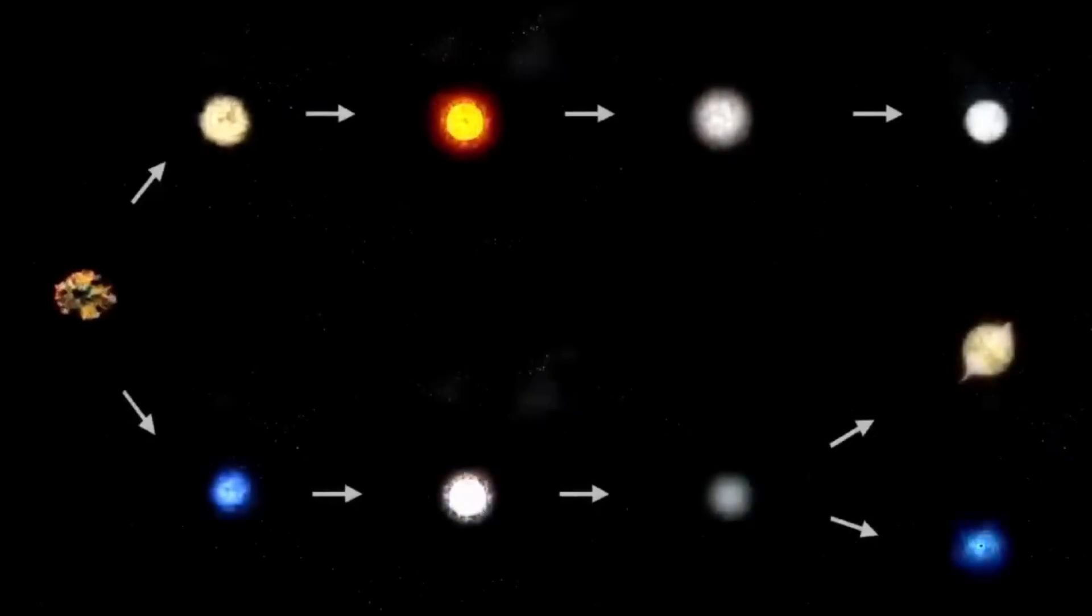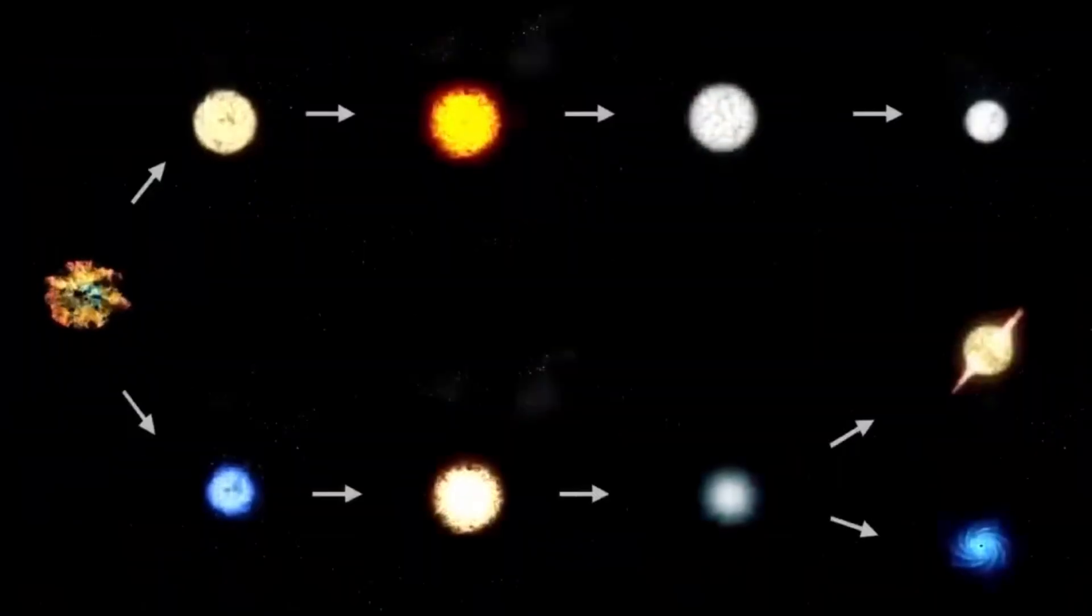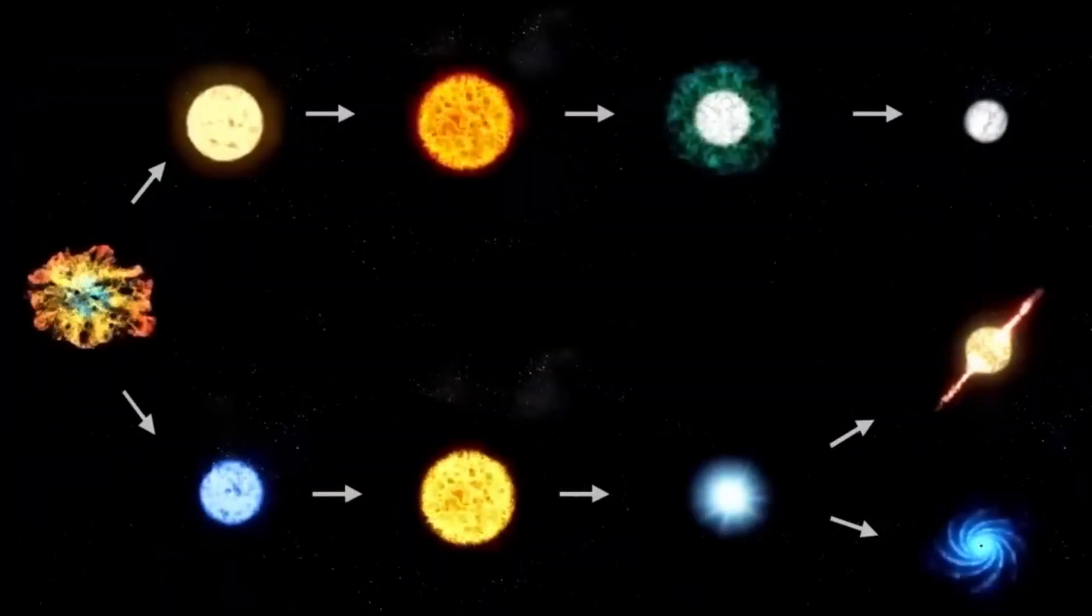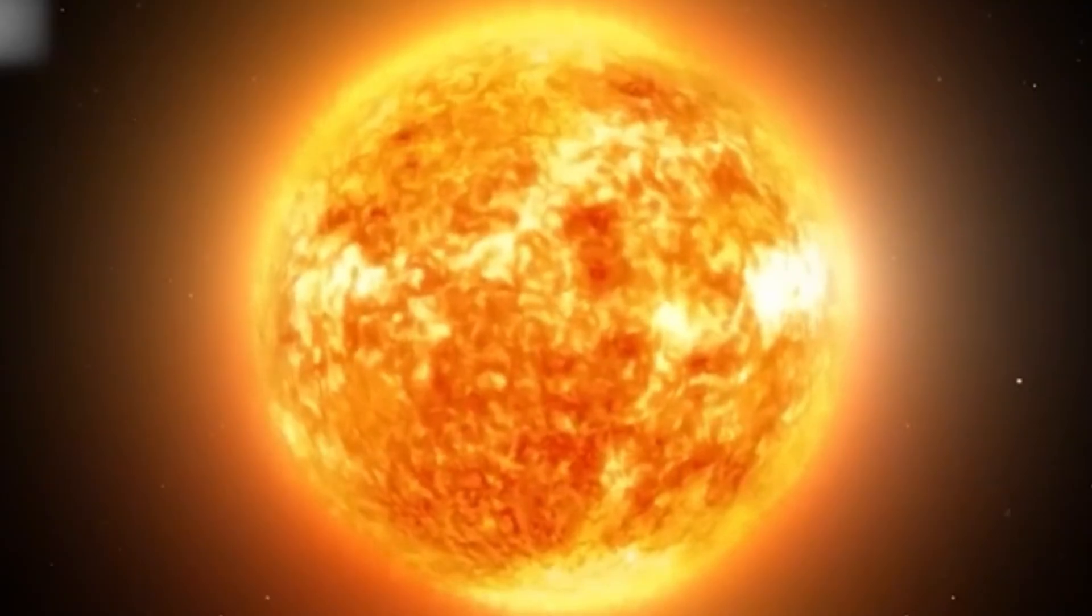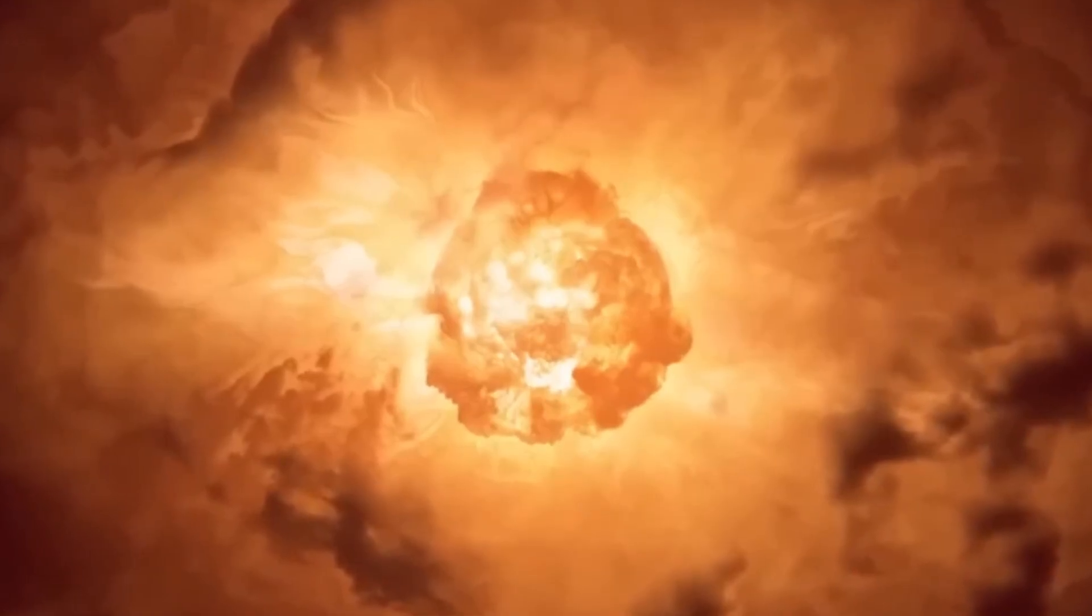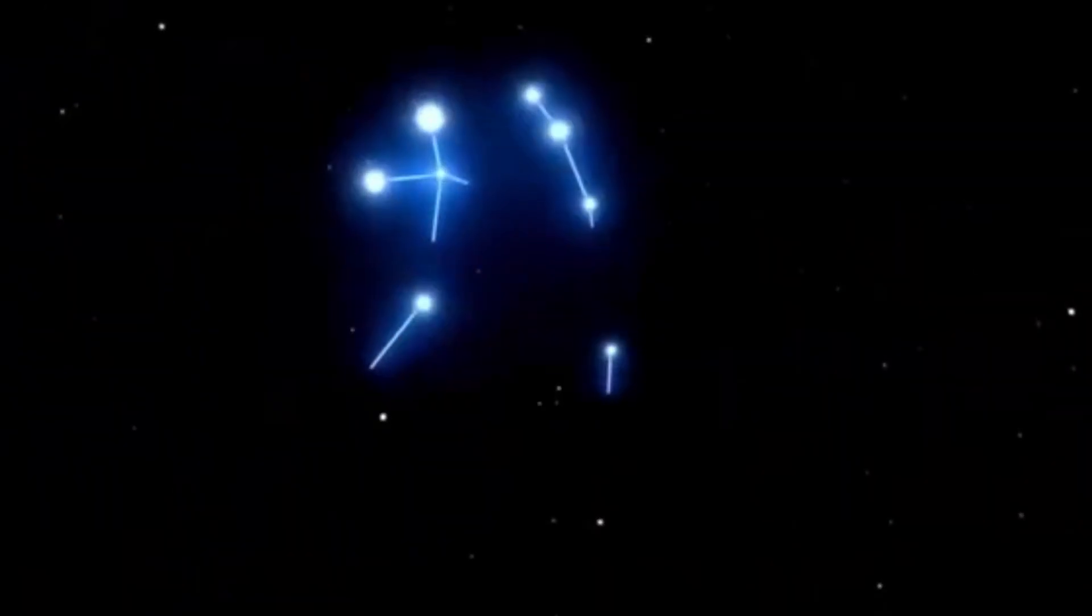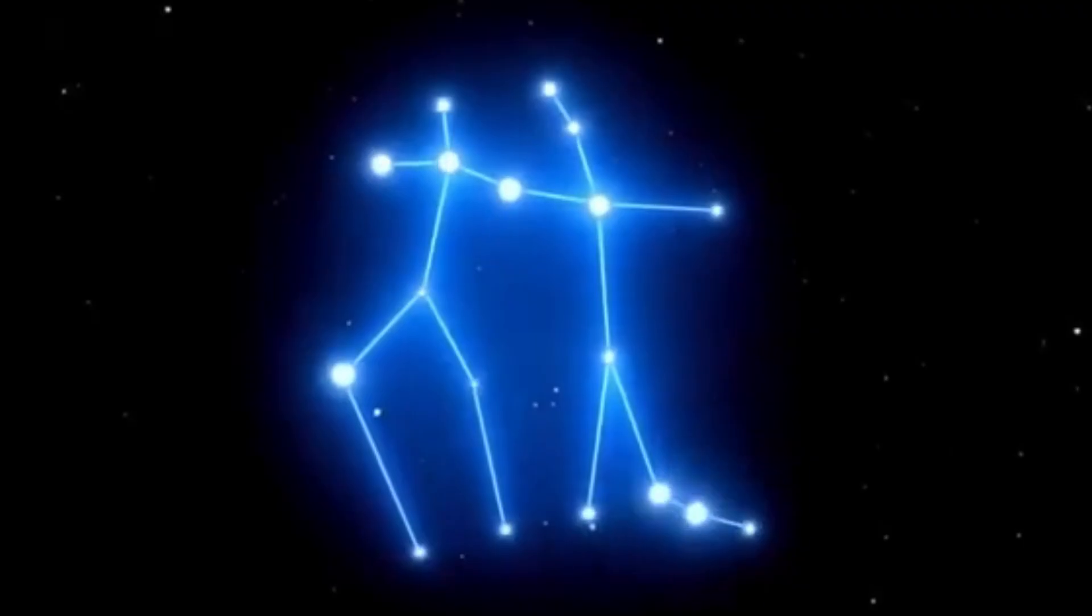One of the most amazing things about studying Betelgeuse is that we can actually see it changing right before our eyes. Unlike most stars, which stay pretty much the same brightness for millions or billions of years, Betelgeuse has been acting up lately. Over the past few years, astronomers have noticed that it's been dimming and brightening in unusual patterns. Sometimes it gets noticeably dimmer, and sometimes it flares up brighter than normal. This unusual behavior has gotten scientists really excited because it might mean that Betelgeuse is getting closer to its final explosion. It's like watching a pot of water on the stove start to bubble more vigorously just before it boils over. The star seems to be going through some kind of instability that could be the early stages of its death throes.